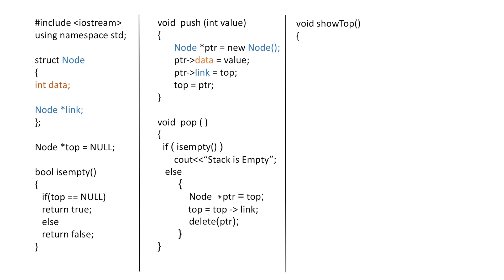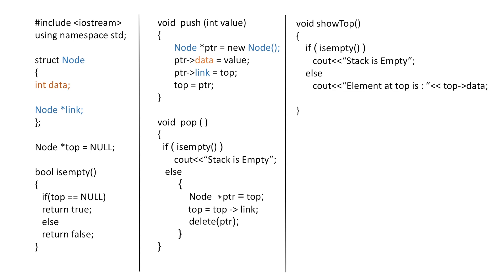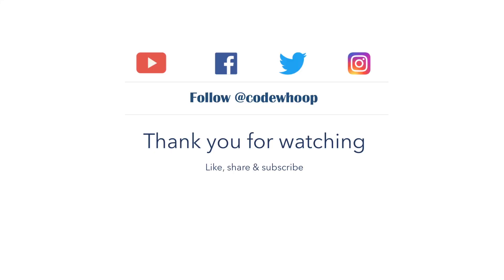Now let's create the showTop function, which will display the element at the top. In this also, firstly we will check if the stack is empty or not, and if the stack is empty we will simply print that, else we will display the element at the top using our top pointer. Inside our main method we can call these functions to perform various operations on our stack. So that was all for this video, thank you for watching.